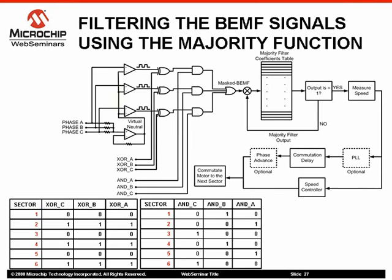This is for the purpose of identifying the occurrence of a zero-crossing event in the digitalized back EMF signal. The first stage of the majority function filter is implemented using two logic operators.